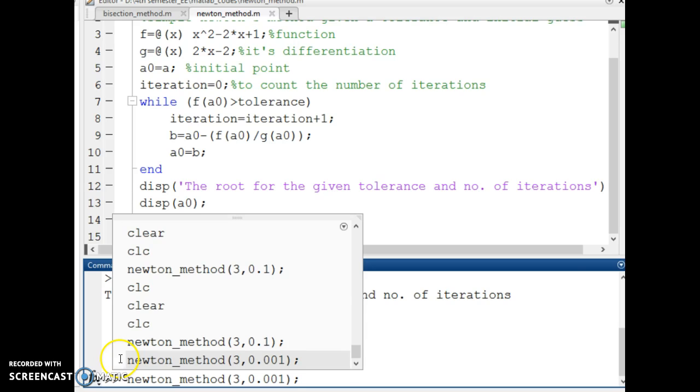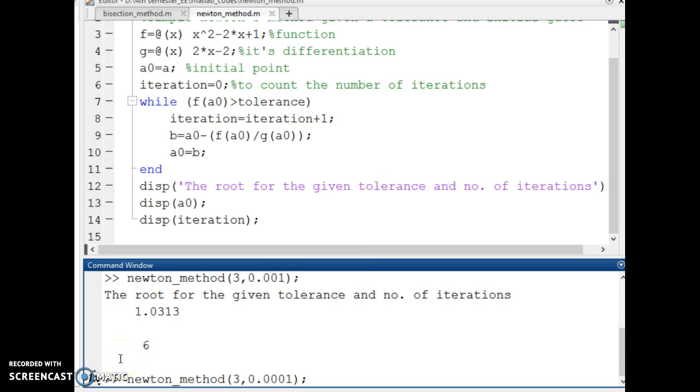Thus you can just increase the tolerance level and you would see that we go closer to the root. The root is of course 1. And the number of iterations correspondingly increase.